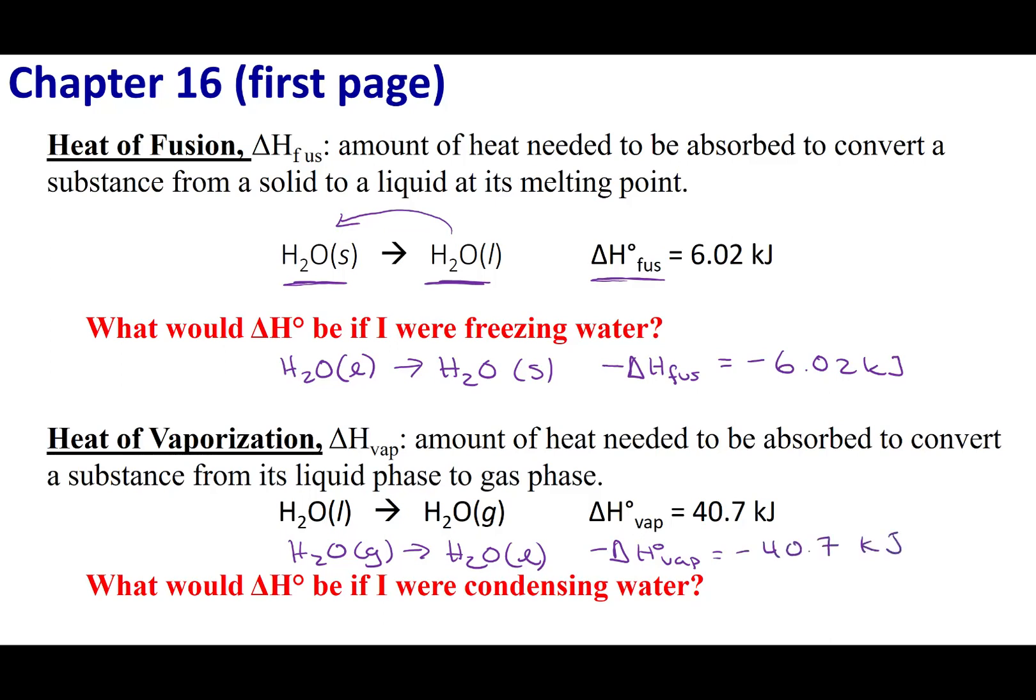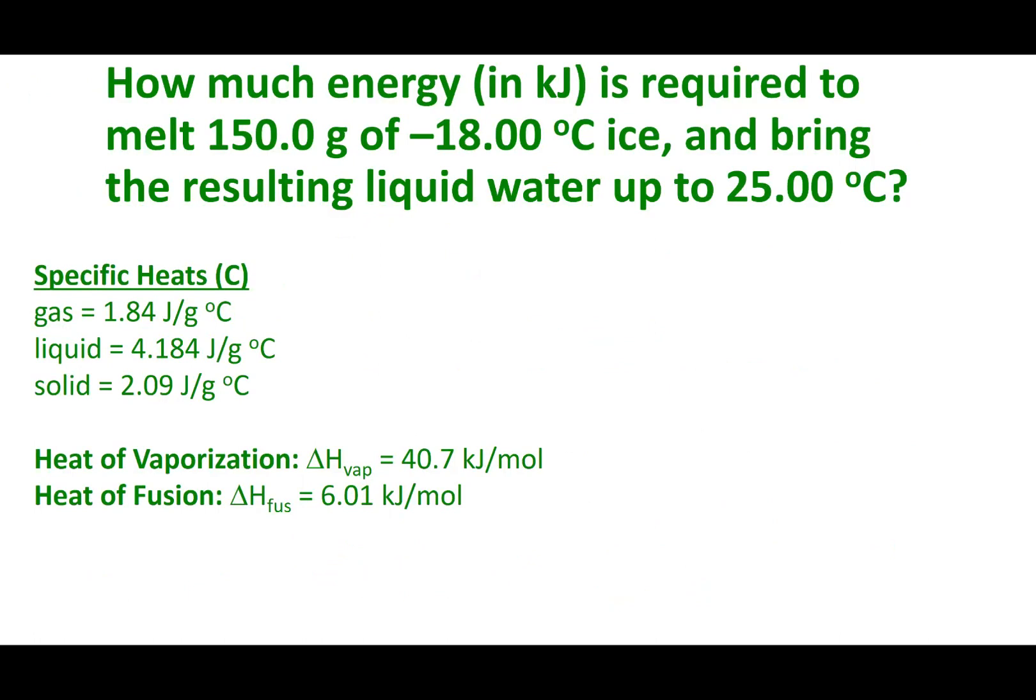So armed with this information about the delta H's for a phase change, I'm going to present to you this problem. I want you guys to calculate the amount of energy it takes for me to take ice, which is at negative 18 degrees Celsius, to liquid water at 25 degrees Celsius. Now to do this problem, you're going to need to know specific heats, heats of vaporization, and heats of fusion. So once you guys run through this problem, hit the right answer on your quiz.